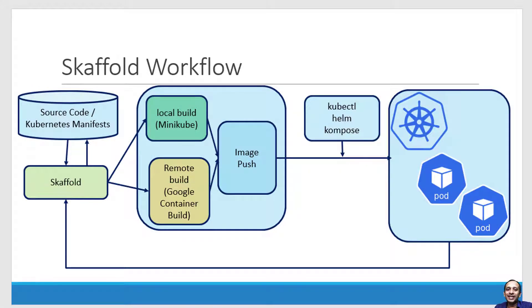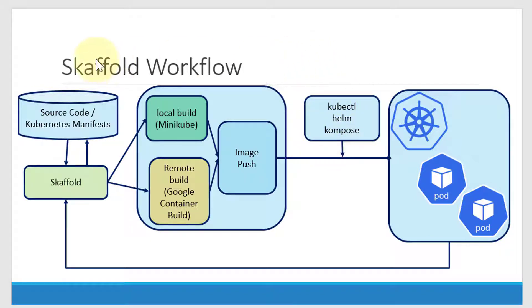Hi, let us have a better understanding about Skaffold with visual representation. Let's assume we have different environments of Kubernetes — either staging, production, or even Minikube. We can use either kubectl, Helm chart, or even Compose to deploy applications into the Kubernetes cluster. Don't worry about these terminologies; we are going to have separate demos for each and every sample, and we can use any of these deployment tools using Skaffold.